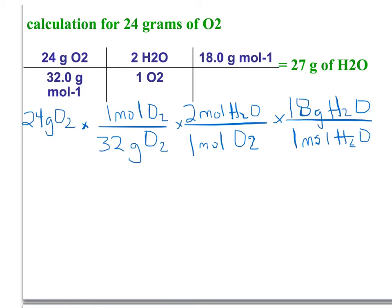First, let's look at the calculation of changing grams of oxygen to grams of water. We start with the grams of oxygen.